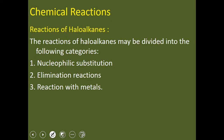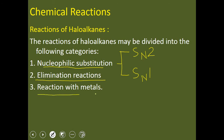Now we will see what are the chemical reactions of haloalkanes. The reactions of haloalkanes may be divided into the following categories. Category 1 is nucleophilic substitution reactions, which are of two types: SN2 — substitution nucleophilic bimolecular — and SN1. The second type is elimination reactions, and third is reactions with metals. Today I will cover only SN2 reactions; for the remaining reactions, please watch my next videos.